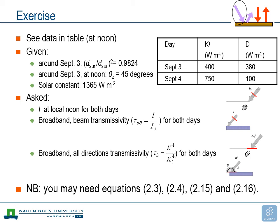The question is for you to calculate a number of things. The first step is to calculate capital I, the beam radiation, for both days. Once you have that, the next step is to determine the broadband beam transmissivity for both days. Finally, determine the all-direction transmissivity for both days. The definitions are given here as repetitions from the introductory lectures. You might need some equations from the book, so take your book and try to solve these questions before continuing to the answers.